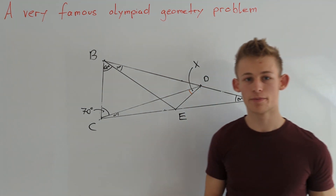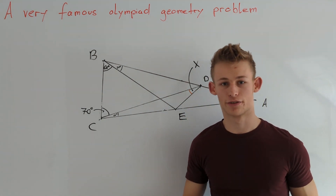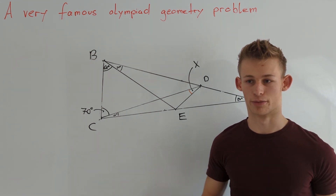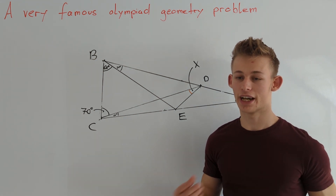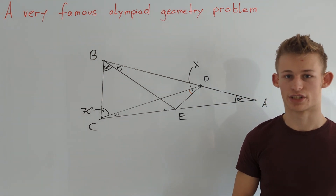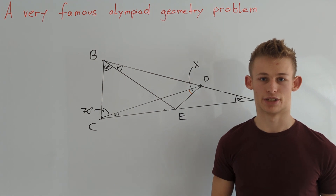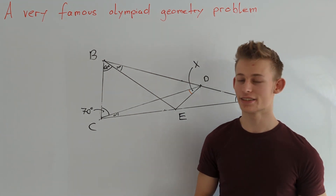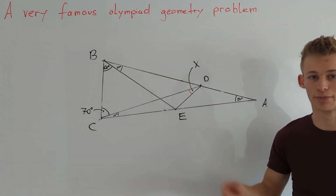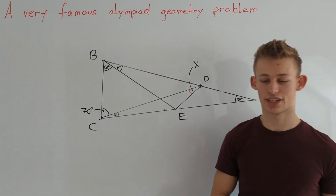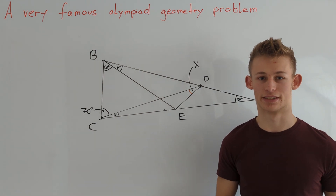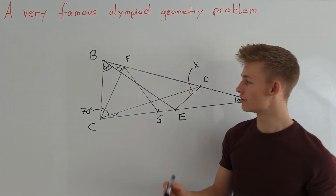For this problem there are a lot of different approaches. One approach is using trigonometry, but I want to present a solution which is very elementary. Our main idea is to draw in some points into the picture such that we have a lot of equal distances between the points.